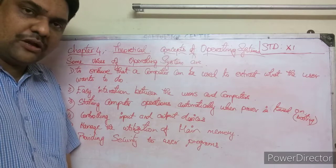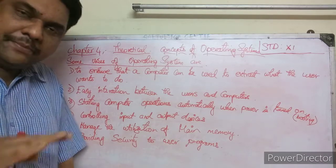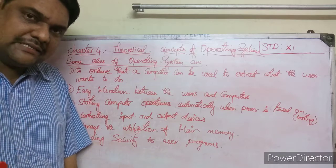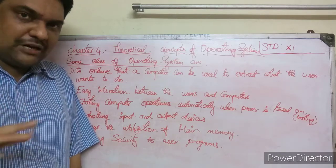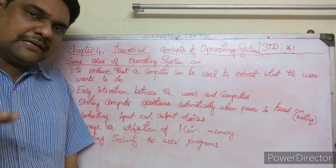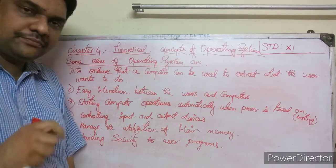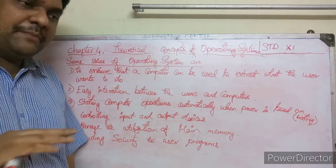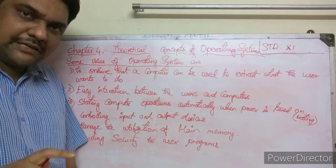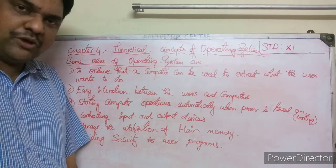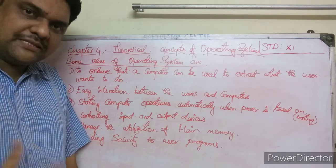Next use: manage the utilization of main memory. This is an important use. The operating system manages the RAM — random access memory — which is a volatile memory. Volatile means its contents are erased once you switch off the computer. When memory becomes full, the OS frees up memory to keep the computer faster.